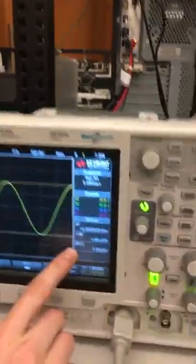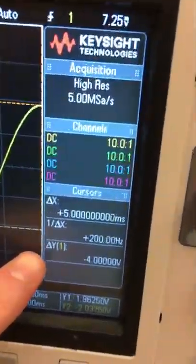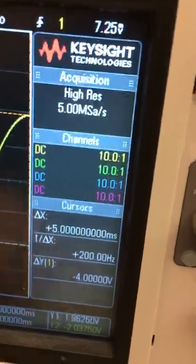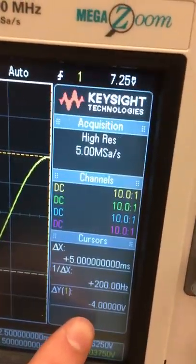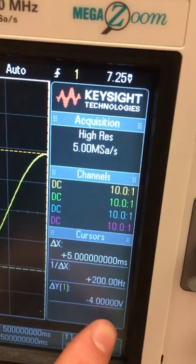Then right here the delta y is going to tell you the difference in voltage between the two y cursors and it says negative 4 volts.